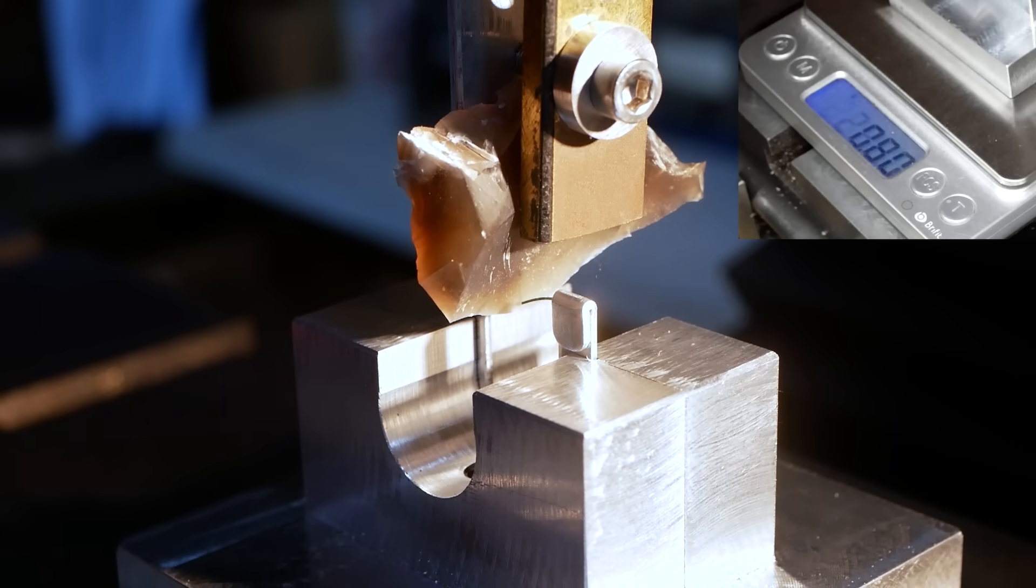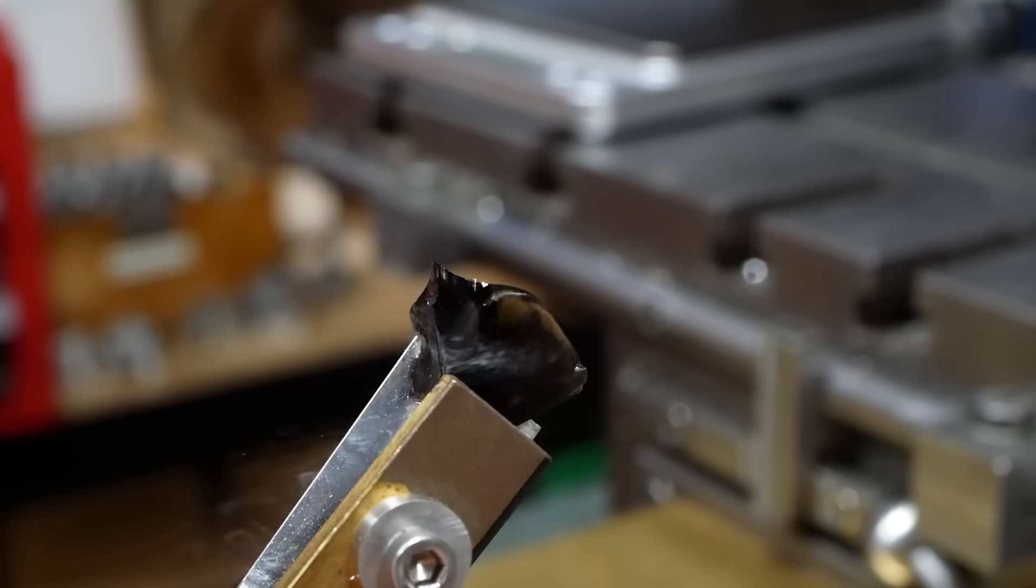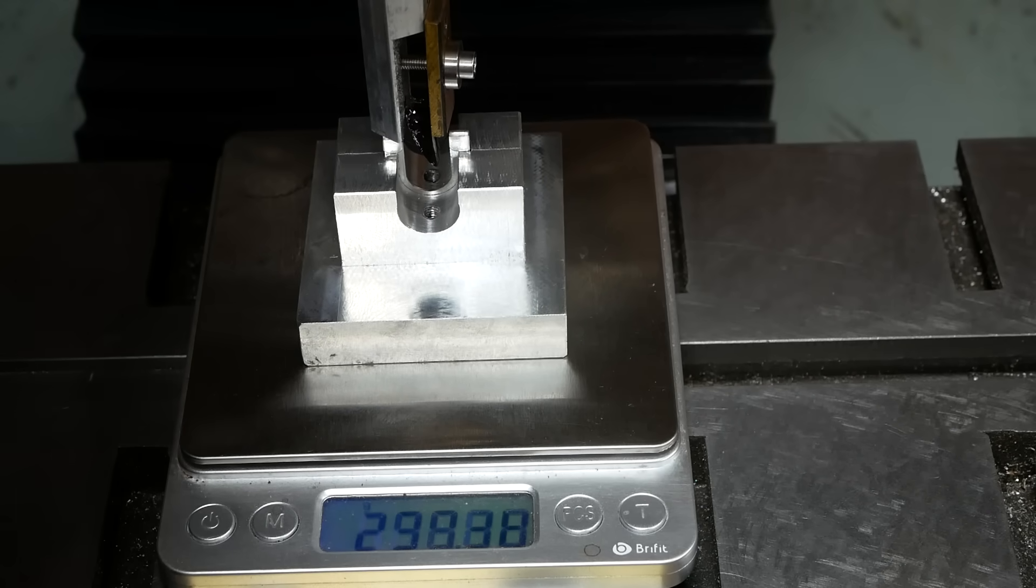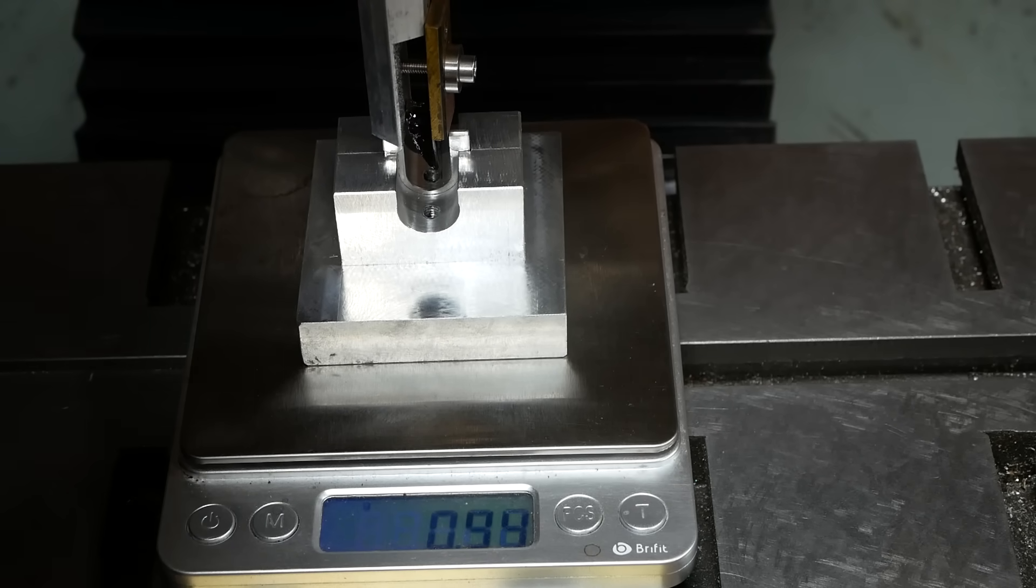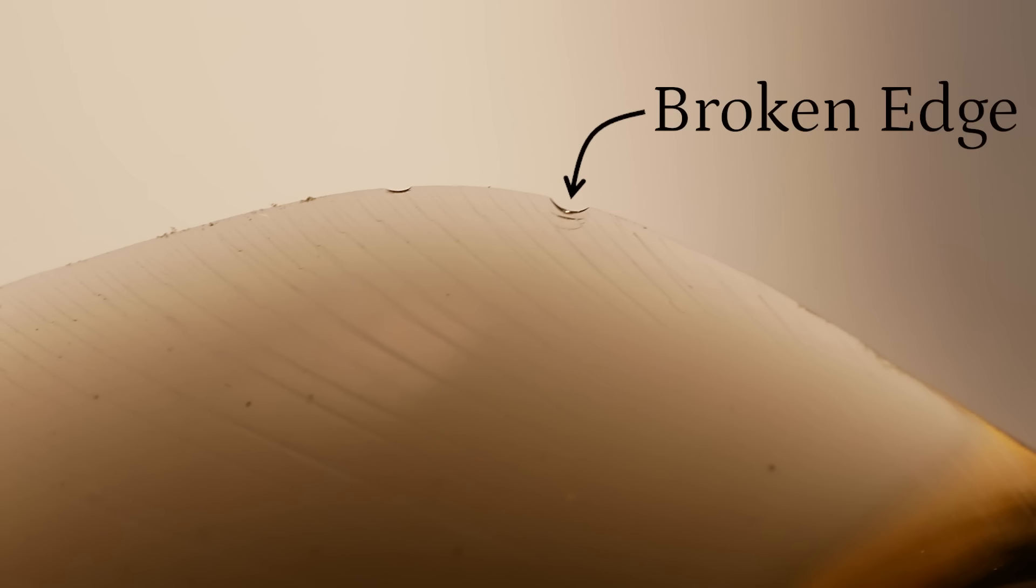And finally, how does the obsidian perform? Terribly. In fact, so poorly that the wire usually gets pulled out of the clip before the obsidian can slice through it. Upon close inspection, the reason behind this is clear. The cutting edge is so thin and fragile, it simply breaks before it has the opportunity to cut the wire.